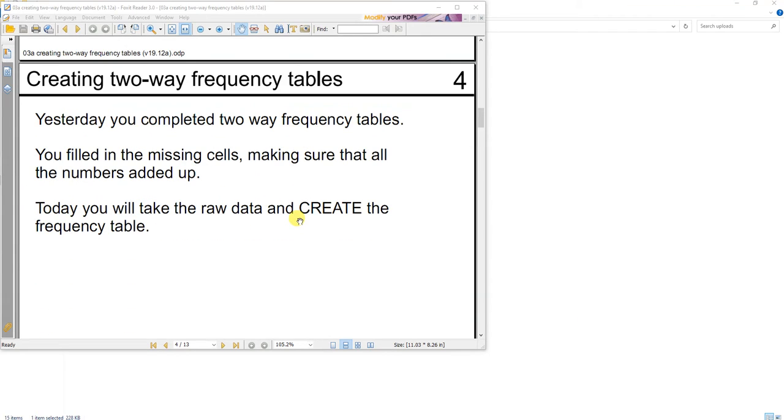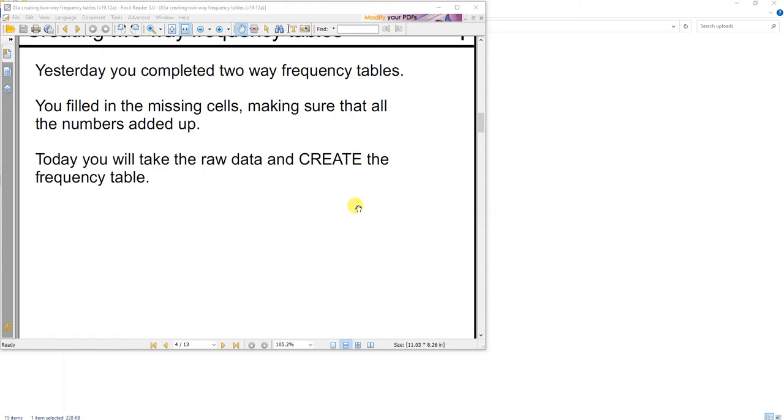So yesterday you completed two-way frequency tables. You filled in the missing numbers. Today you're gonna take all the raw data and create the entire table. You're gonna fill in all the numbers.